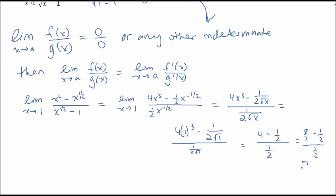That's 8 halves minus 1 over 1 over 1, which is 7 halves over 1, which is the same thing as 7 halves times 2 over 1, and our answer is 7.